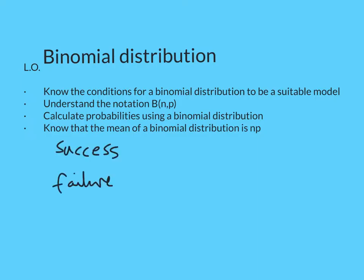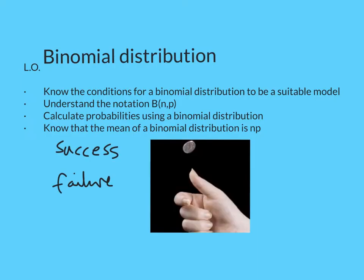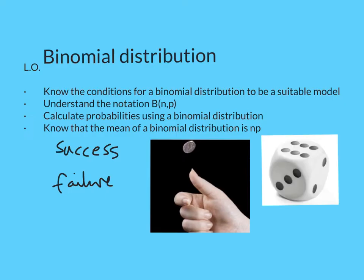Let's say we're flipping a coin. You can obviously get either heads or tails, and to make this binomial, you need to say one of those is a success. So for example, if you call heads, then heads is your success and tails is your failure. Or if you're rolling a dice, to make this binomial, you'd have to choose one number to be success. For example, in some games you need to roll a 6 to start. So if 6 was success and everything else was failure, then this would be binomial.